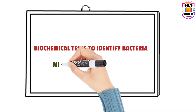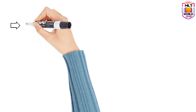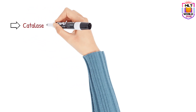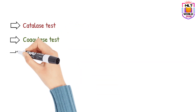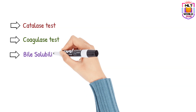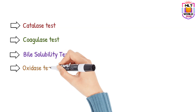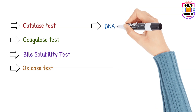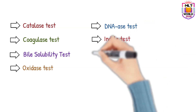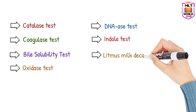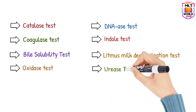Biochemical tests to identify bacteria in the microbiology department are: first, the catalase test, then the coagulase test, bio solubility test, oxidase test, DNase test, indole test, litmus milk decolorization test, and urease test.